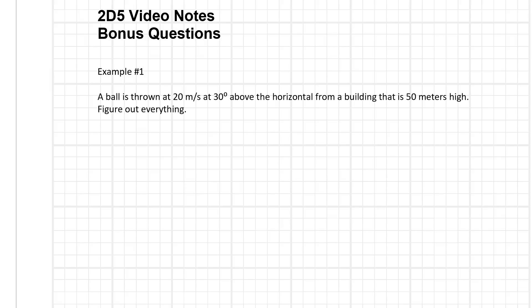Hi and welcome to this last video of the unit 2D5 video notes. These are the kind of questions you might get for extra marks for bonus. At this time I don't have a mastery check, so if I change that policy talk to me about it. The problem says a ball is thrown at 20 meters per second at 30 degrees above the horizontal from a building that is 50 meters high. Figure out everything.